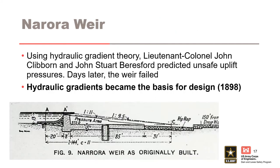Using these principles — the hydraulic gradient theory — Colonel John Claiborne and John Stuart Beresford predicted unsafe uplift pressures on the Narora weir. Days later, after making this prediction, the weir failed. Prior to that, the weir had stood soundly for 20 years. The average hydraulic gradient was 1 over 11. What happened was the uplift pressures caused the rear apron to wash out, dropping the gradient to 1 over 9.5. As a result, piping washed out the foundation and the weir completely failed. Because of this prediction and prompt failure, hydraulic gradients quickly became the basis for design.